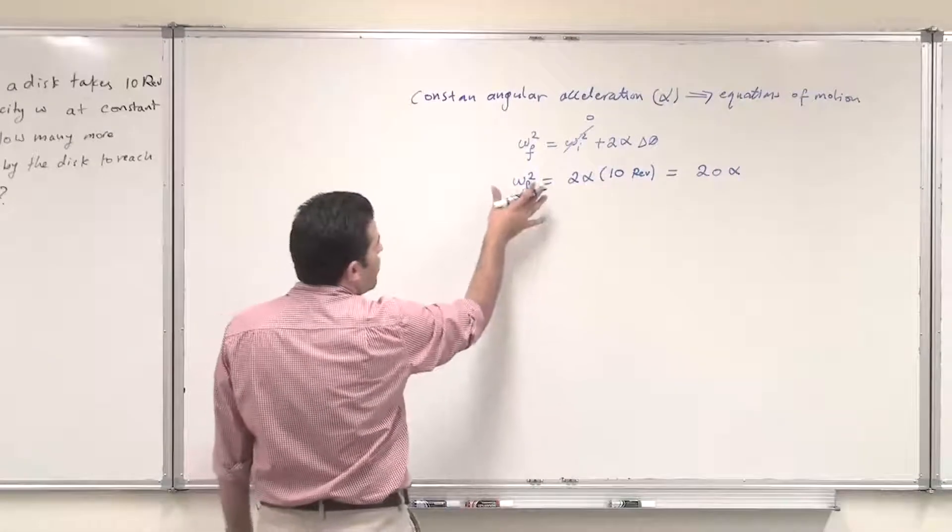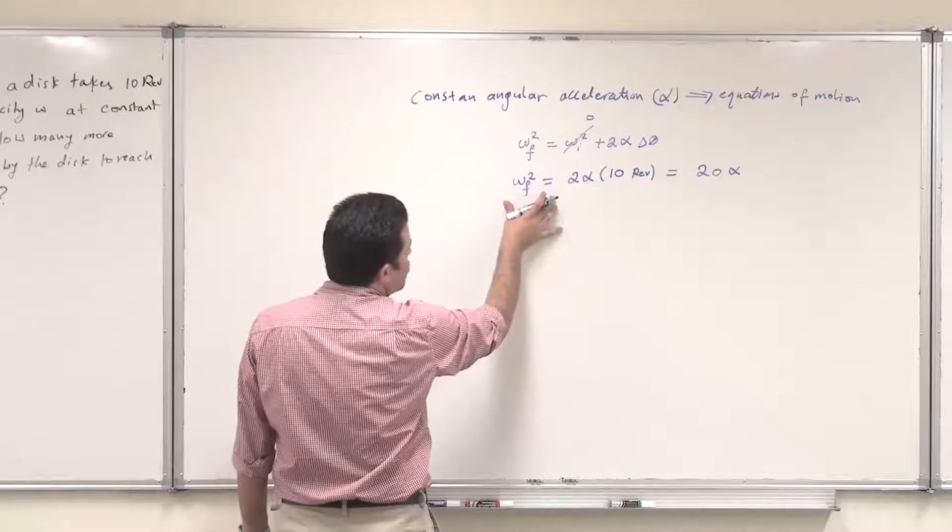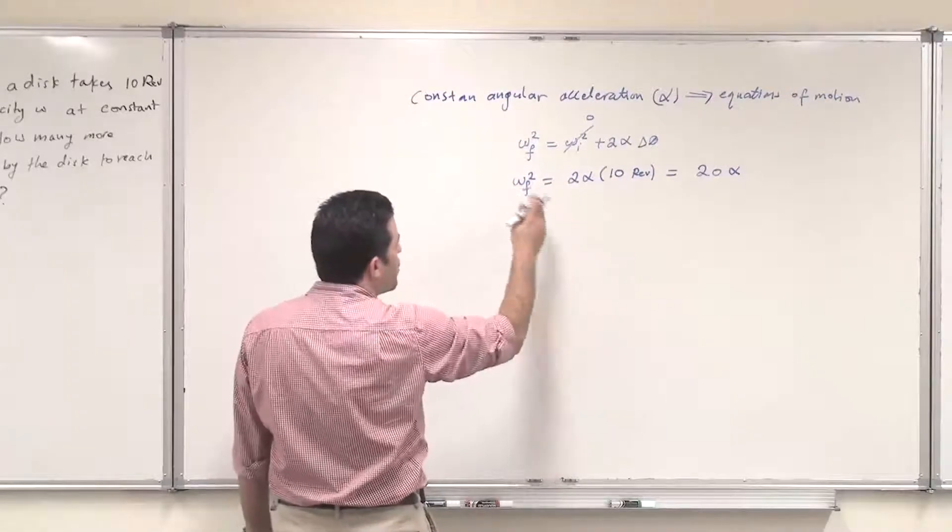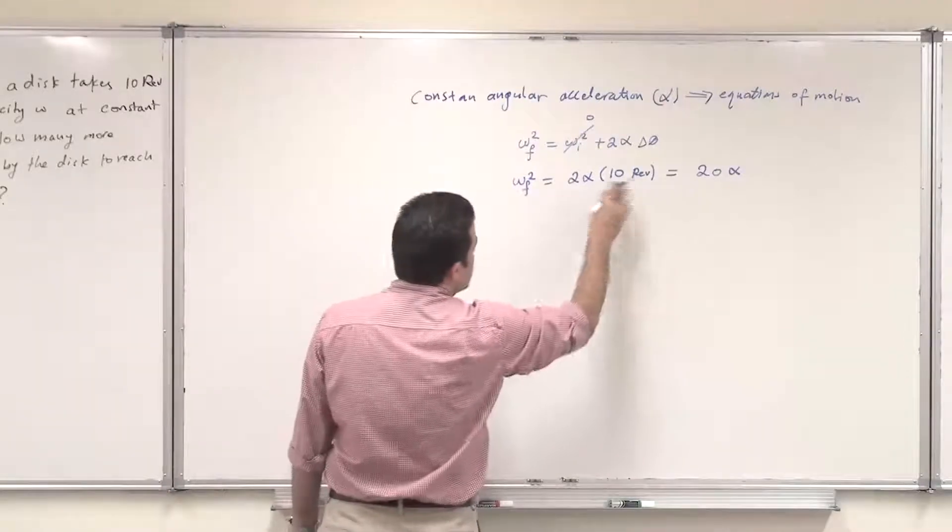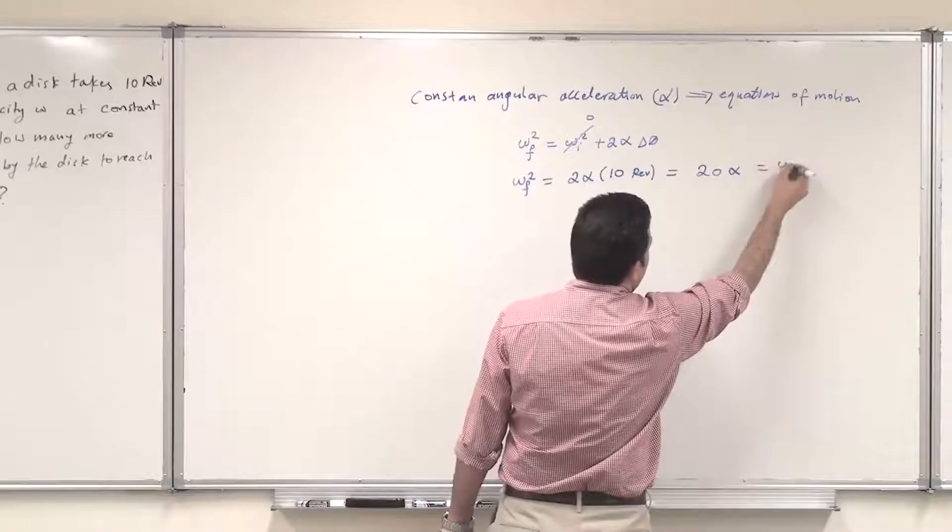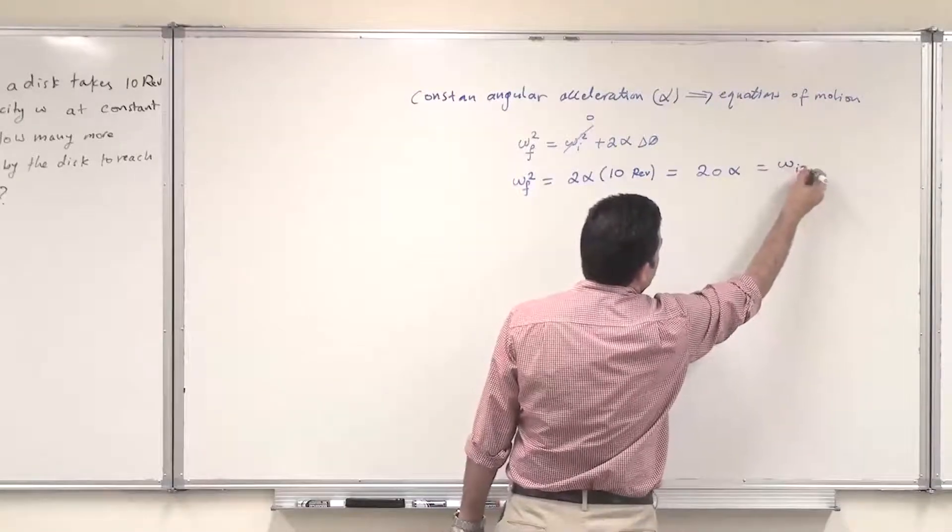Now we found the final velocity of the first stage. How many revolutions to get 2 omega? We need to use this as the initial stage, so this will be omega initial 2 squared.